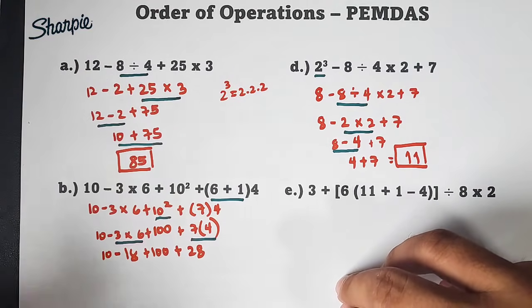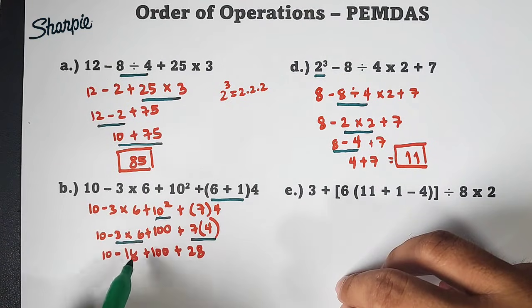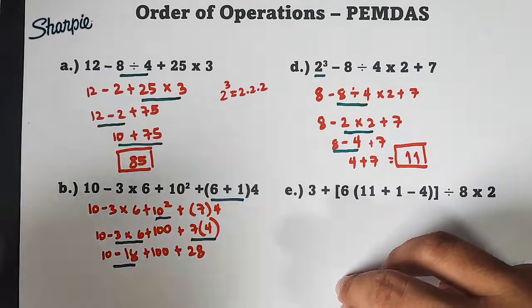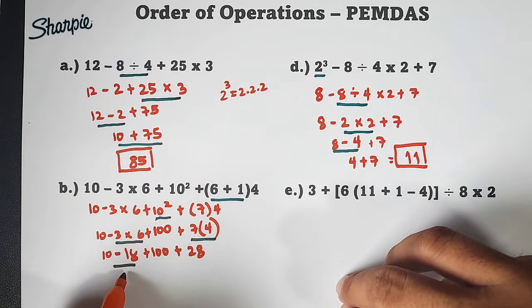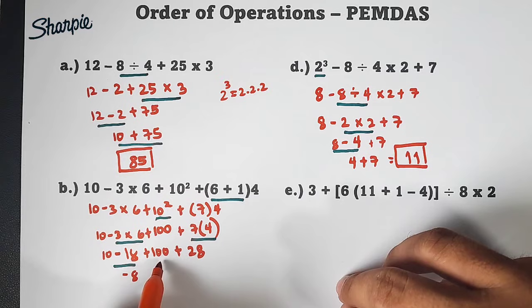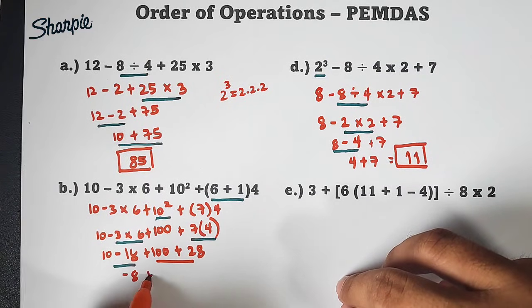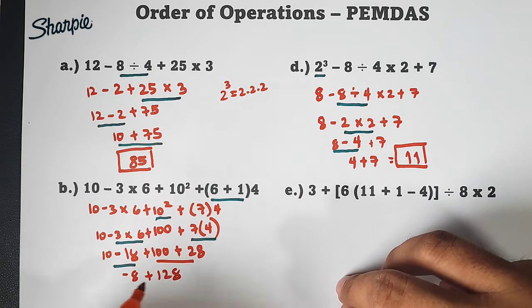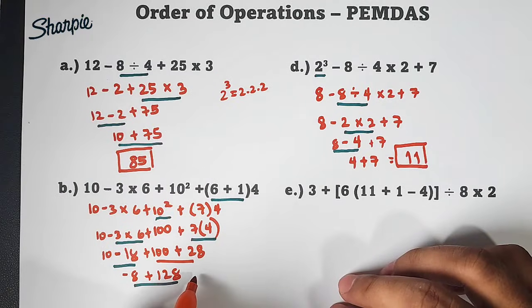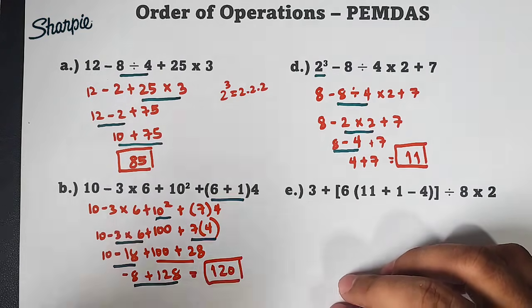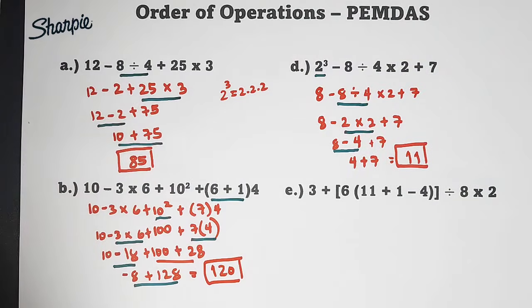This part is negative 8. And these two is plus 128. Now, when we add negative 8 and 128, that is equal to 120. The answer is positive. So it's a bit long because we did it step by step. But those who are used to PEMDAS can shorten their solution. We skipped one part. Now, let's move on with letter E.